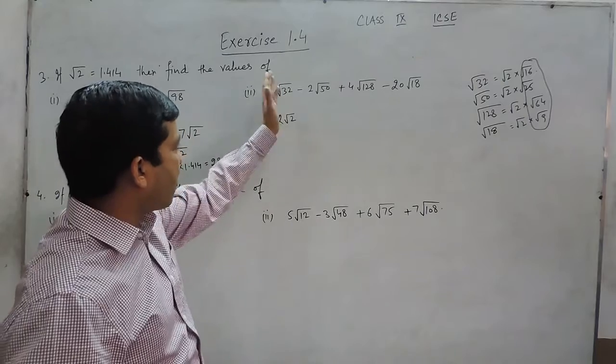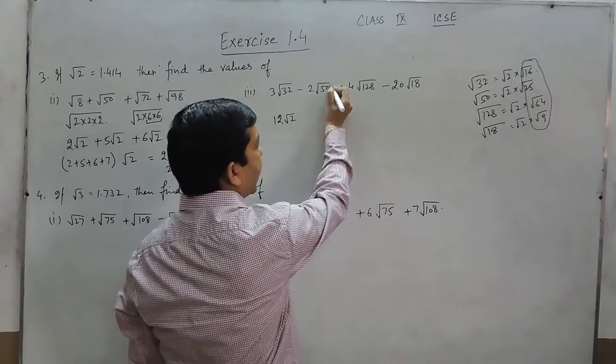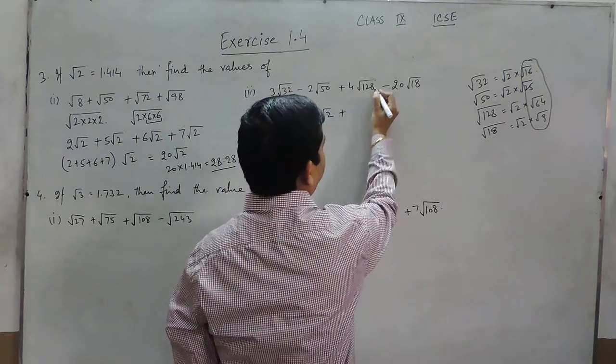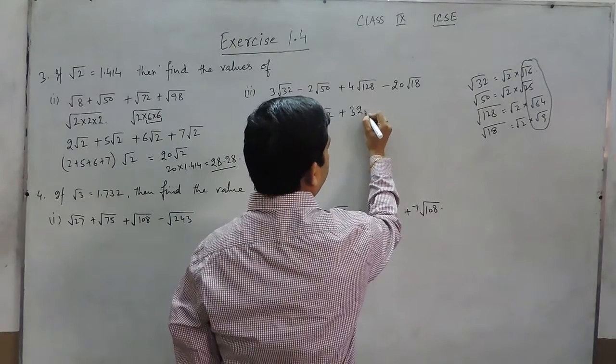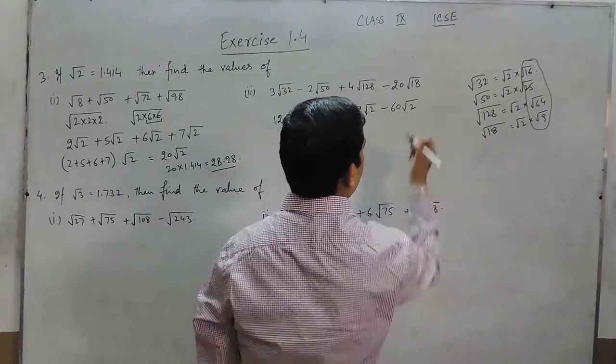If I take 4 outside, 3 × 4 is 12 and √2 will remain. Here also when I take 5 outside it is 10√2. Here also when I take 8 outside it is 32√2. And here when I take 3 outside it is 60√2.